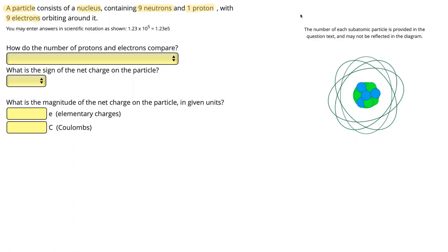Over here we have a diagram showing an atom. Inside we've got the nucleus, that's this here. It tells us in the question that it contains nine neutrons and one proton, and it mentions over here the number of subatomic particles may not be reflected in the diagram, so that's why we can't see nine of one color and one of the other.